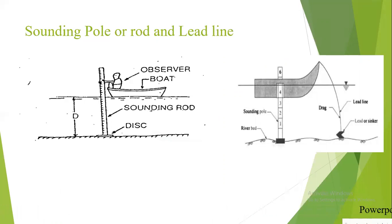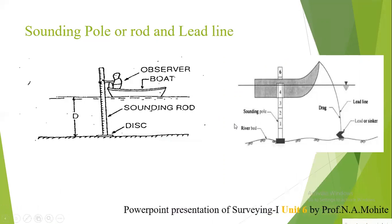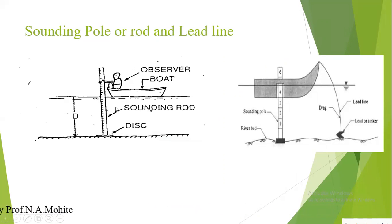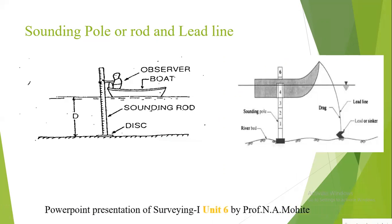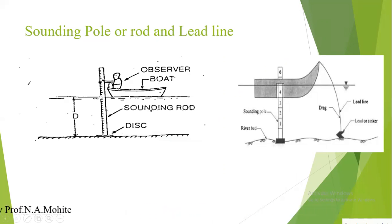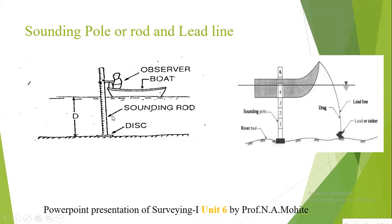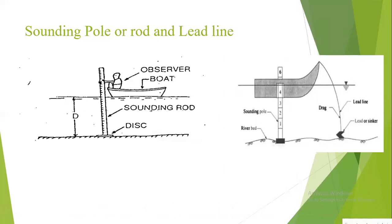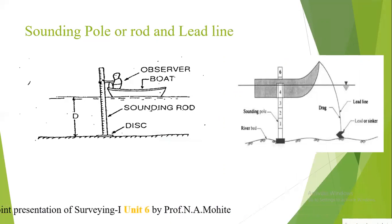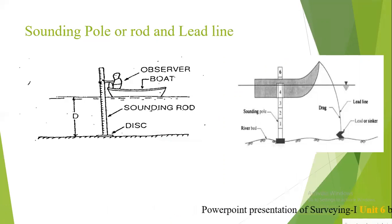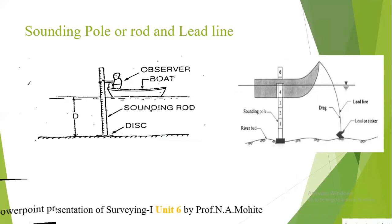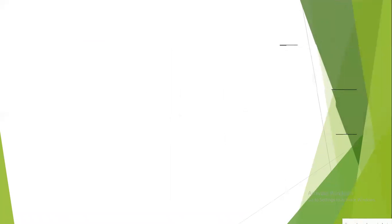To measure the depth, the sounding rod is slowly immersed vertically from the boat at the required location. When the base plate touches the bed of the river, the depth can be determined according to the graduations marked on the sounding rod. This instrument is a graduated, straight-grained, well-seasoned, tough timber rod or pole of 5 to 10 centimeters in diameter.